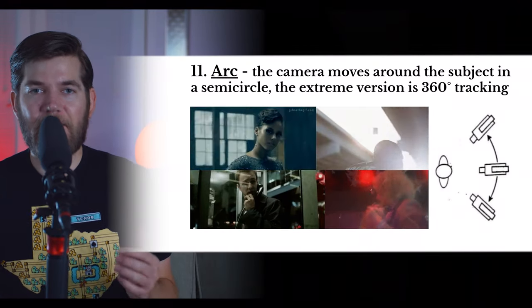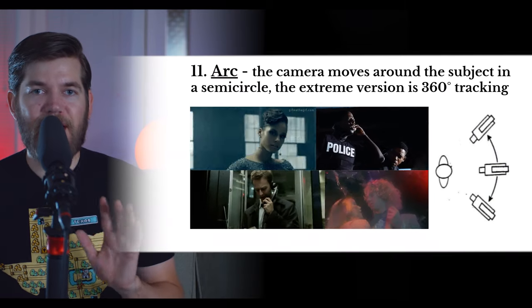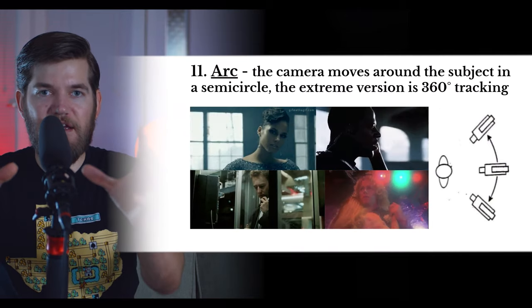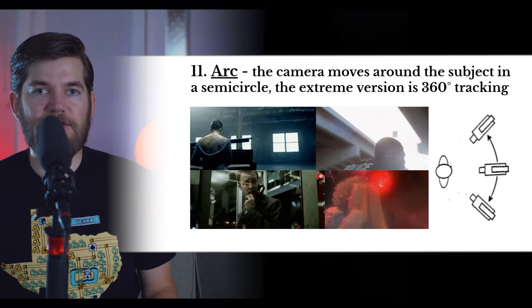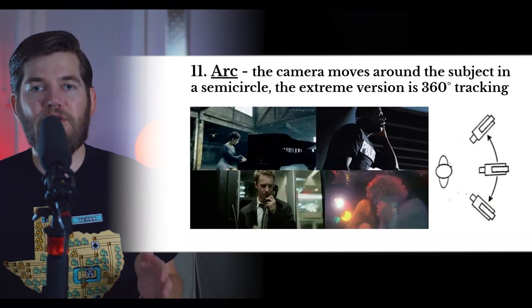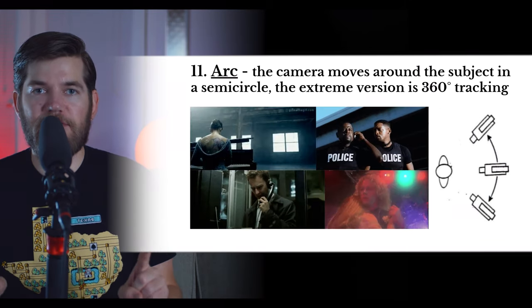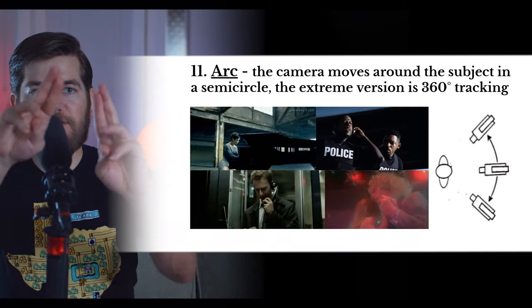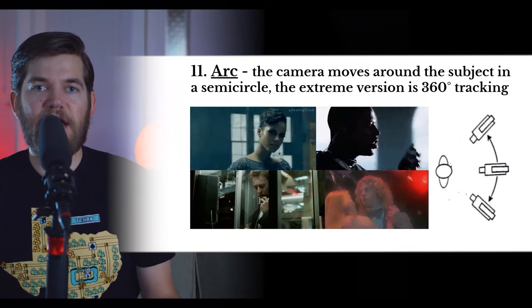Next up we have the arc — a fun type of shot, but one criticized if overused. The arc is when the camera moves around a subject. The lens stays pointed at one thing, but the body of the camera moves around the subject 180 degrees in a semi-circle or half circle. A 360-degree tracking shot is a full rotation around a subject, so it would take two arcs to complete a 360-degree tracking shot.